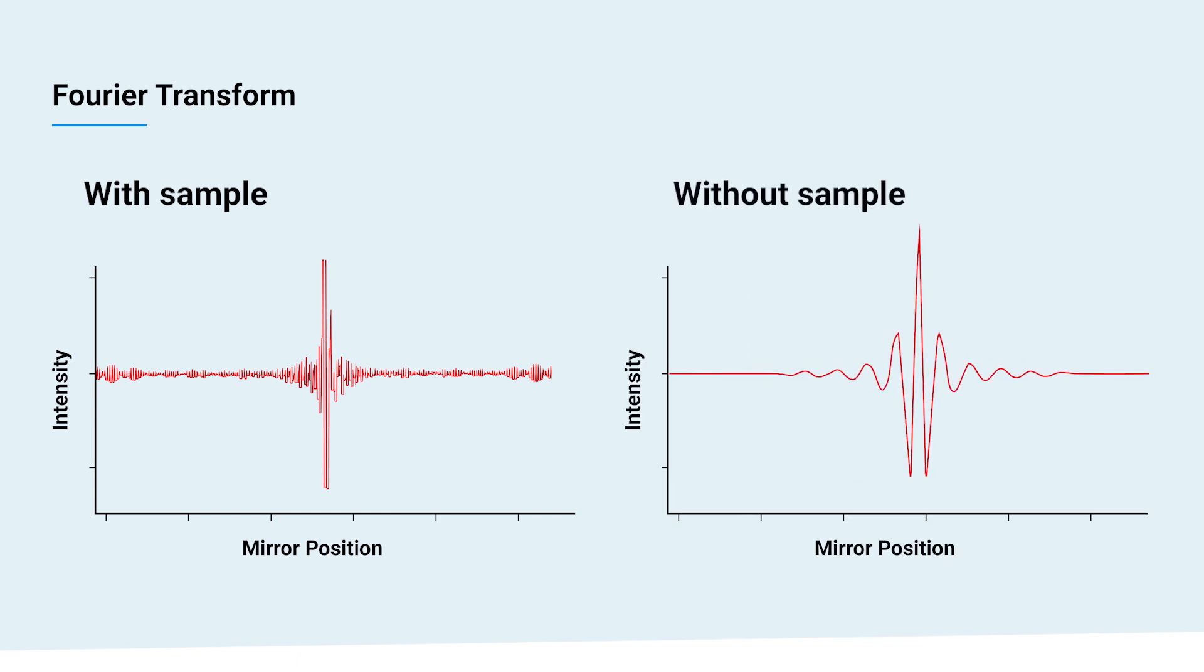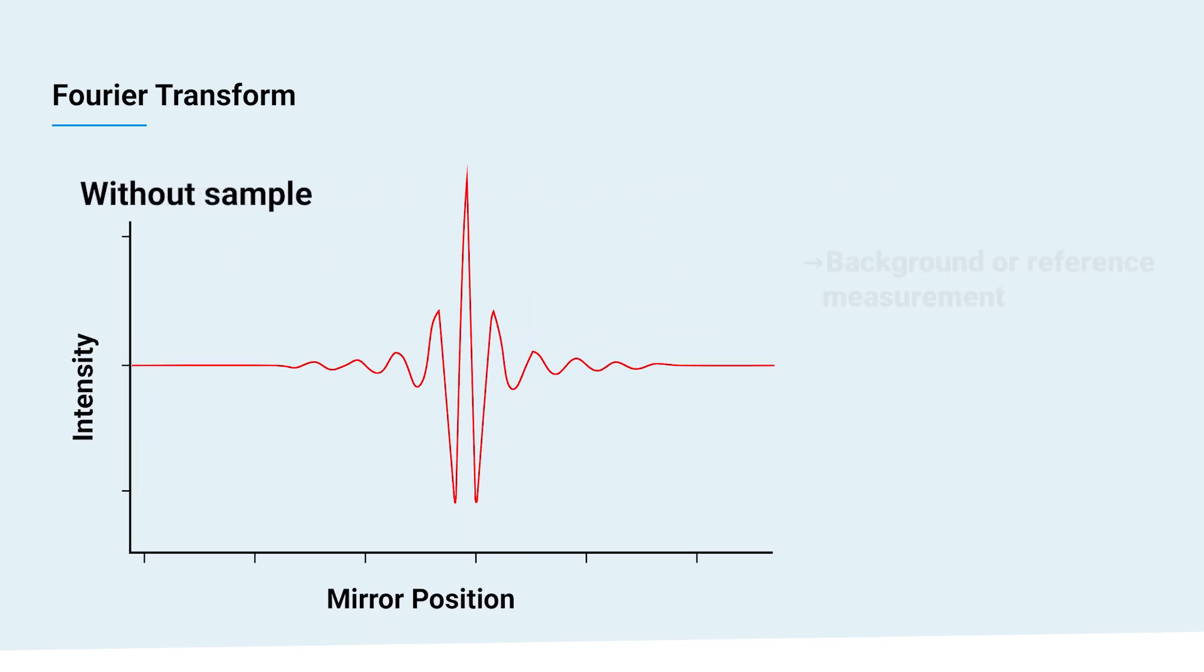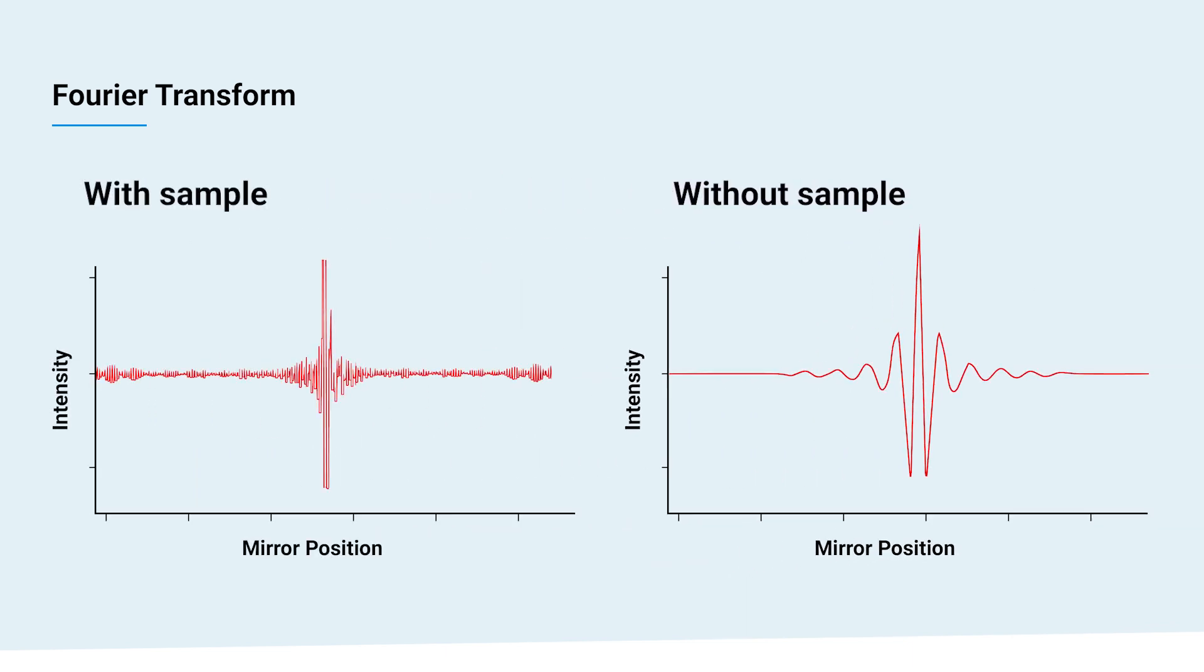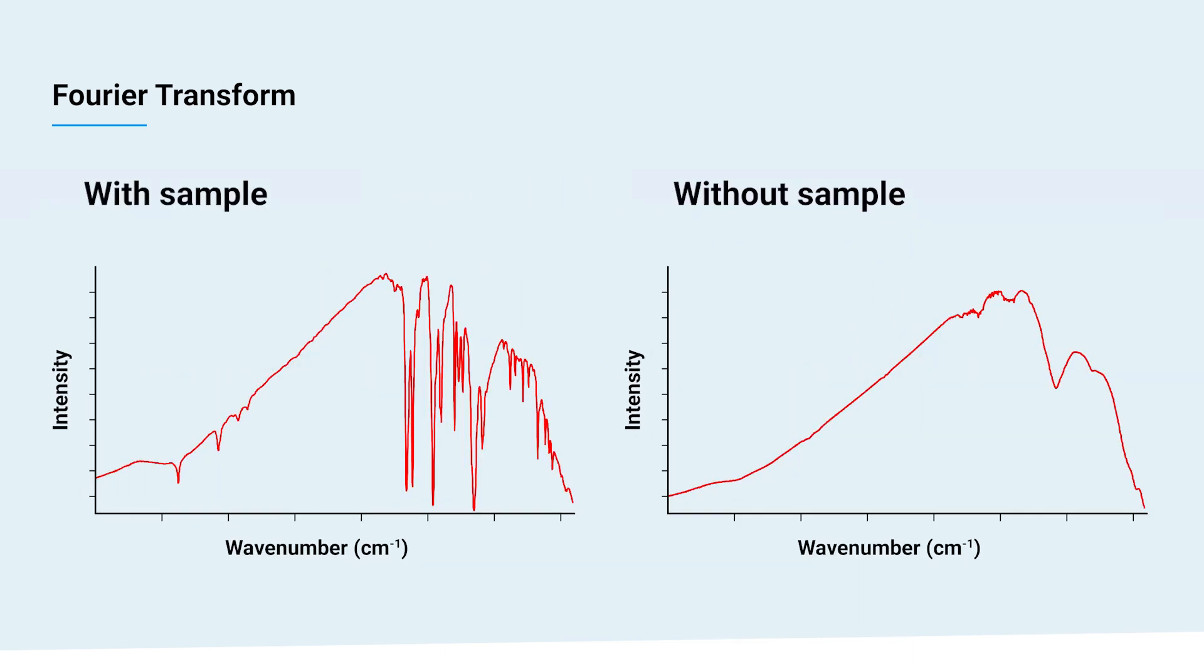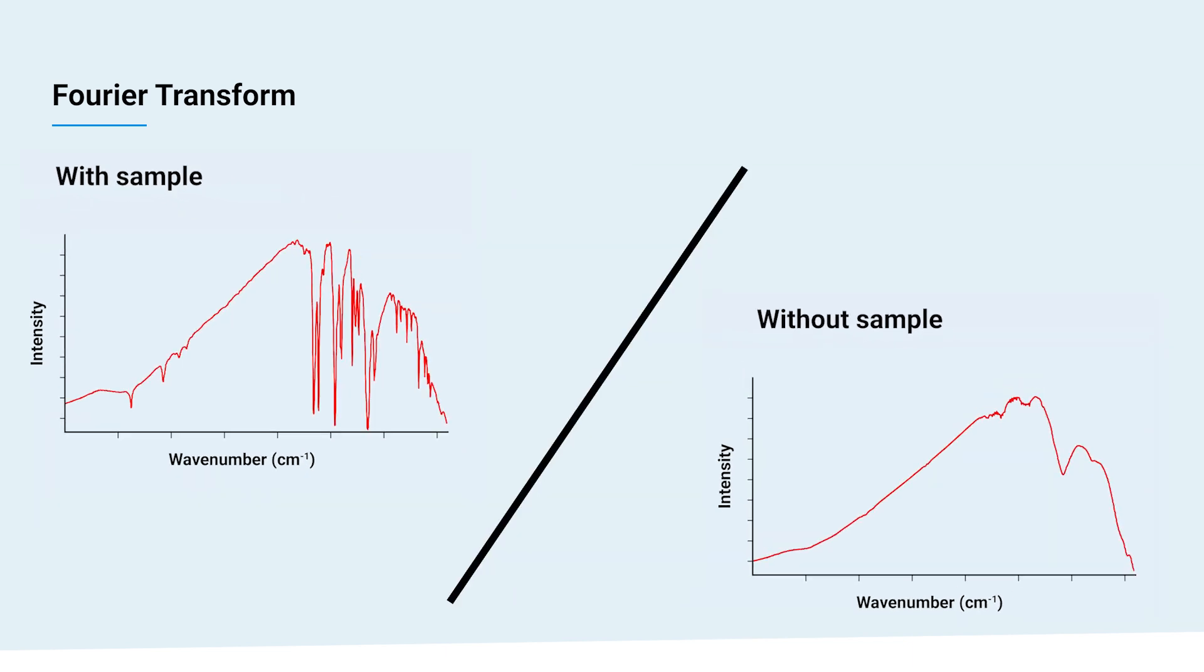In practice, this is done for two interferograms, one with a sample inside the beam and one without sample. The latter provides the so-called background or reference measurement that helps eliminate environmental effects like carbon dioxide or water vapor. The result already looks like a classical FTIR spectrum. As a final step, the sample spectrum is divided by the background spectrum.